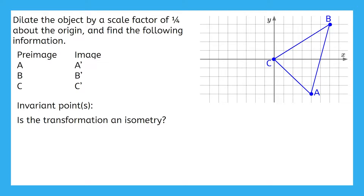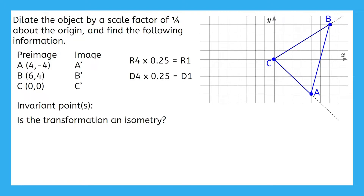We don't need to draw the center of dilation, because we already have point C drawn there. We'll just dilate about point C. Drawing the lines connecting to the center of dilation to any other vertices means tracing over the sides of the triangle. We can write the vertices of the pre-image and then move on to find A prime. Point A is 4 units right and 4 units down from the center of dilation. Now we can apply the scale factor by multiplying by 1/4, or 0.25. This gives us right 1 unit and down 1 unit. Starting back at the center of dilation, we move right one and down one and place A prime.